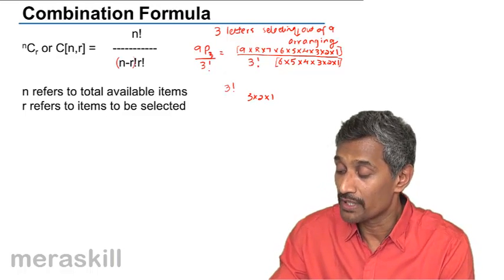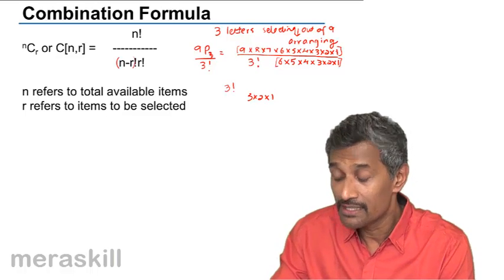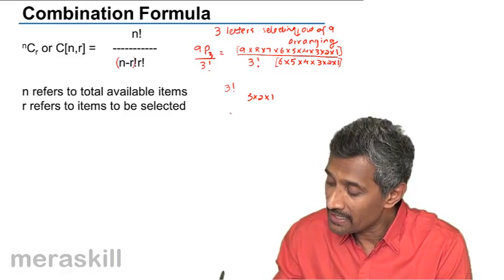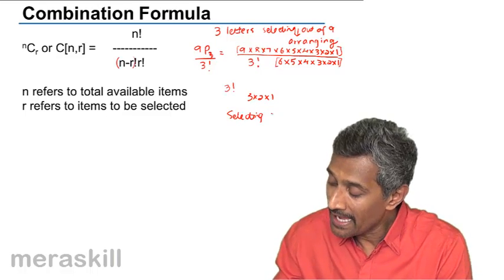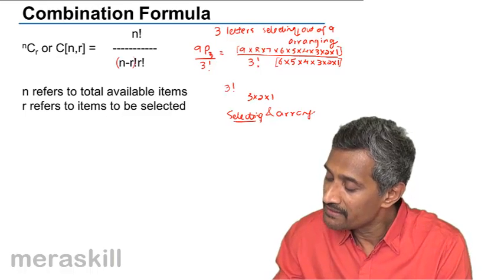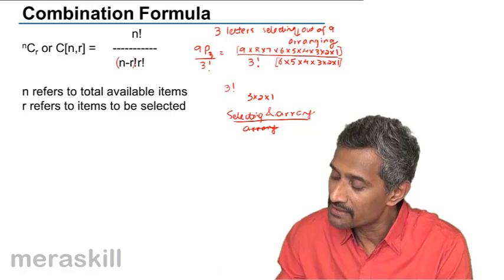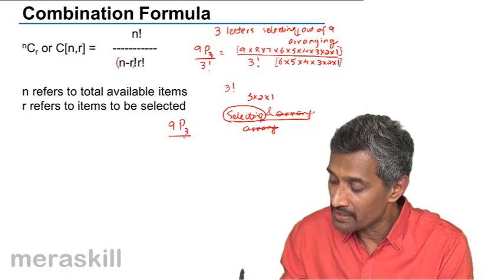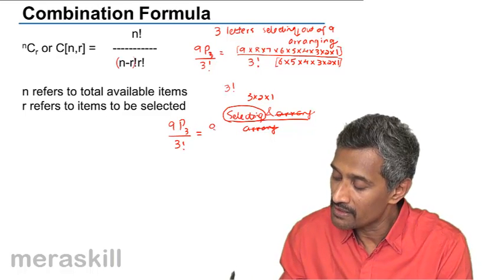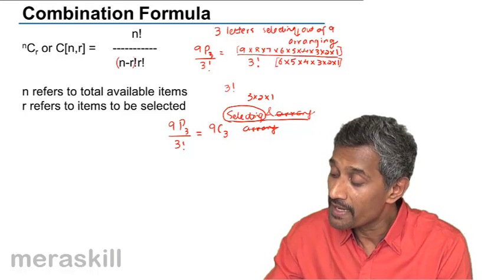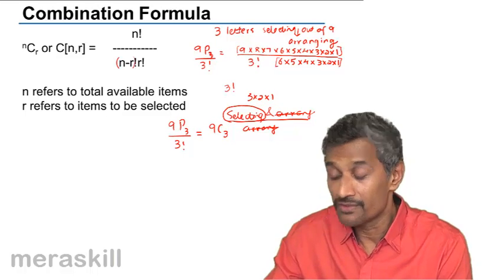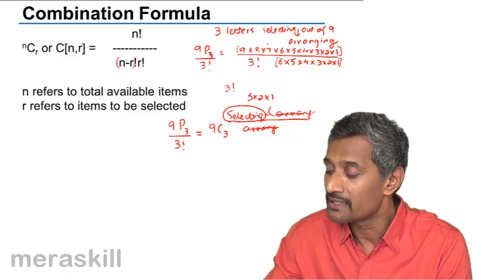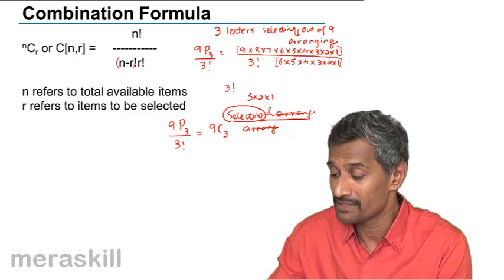If you divide this by 3 factorial, what you've actually done is you have selected and arranged them and divided by the different number of ways you've arranged. So it is like selecting and arranging, then dividing by the number of ways you've arranged — ultimately, it only means a selection. So 9P3 divided by 3 factorial is nothing but 9C3. You have A, B, C.